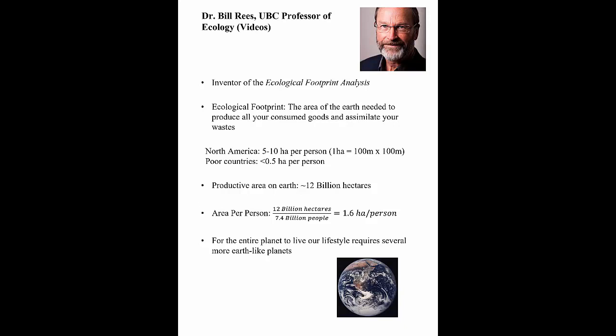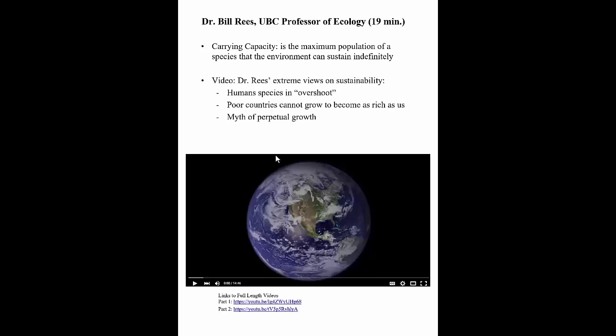This has some implications for the whole sustainability problem. Bill Rees talks about something called carrying capacity — the maximum population of a species that the environment can sustain indefinitely. He has some fairly extreme views on sustainability. He thinks humans are indeed in overshoot, and there isn't enough land for poor countries to grow to become as rich as us. He talks about the myth of perpetual growth. These are the links to the two videos, which I'll put on D2L. They're about 50 minutes long each, definitely worth watching. You may not completely agree with them, but there are many academics and scientists who do agree with this perspective.